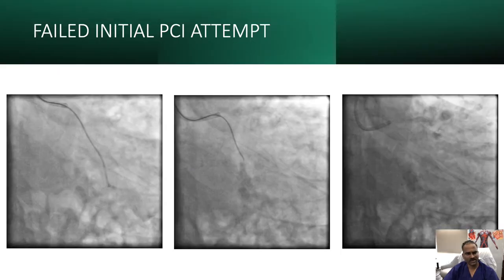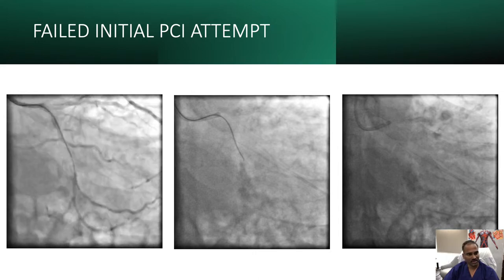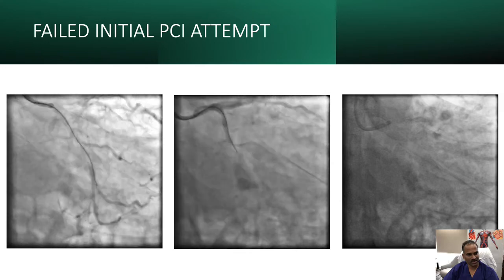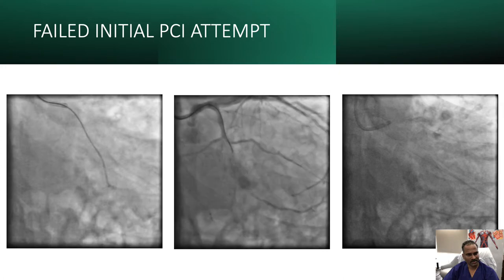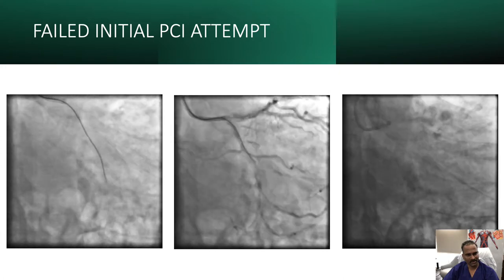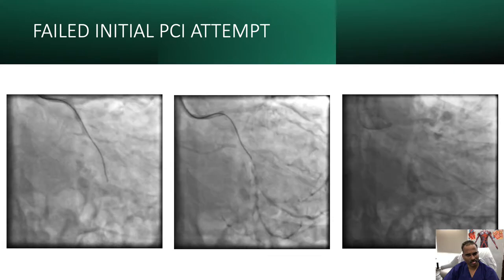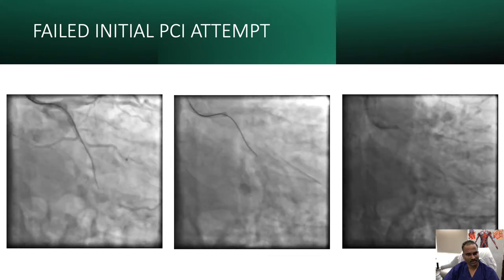The right coronary is basically non-dominant, small vessel, normal. During the first attempt, a Gaia wire went subintimally. After pulling back the wire, there is a clear subintimal contrast tracking which is quite visible, and the procedure was stopped because of the wire position.